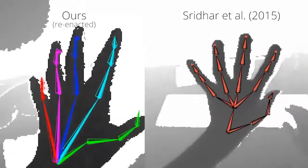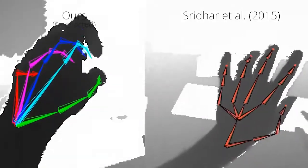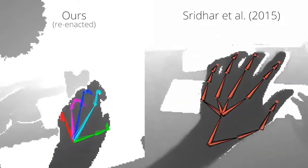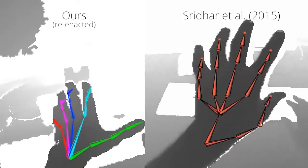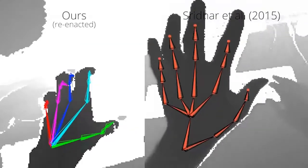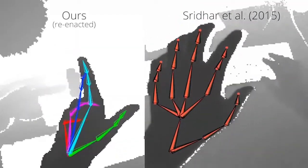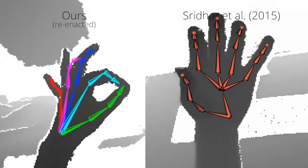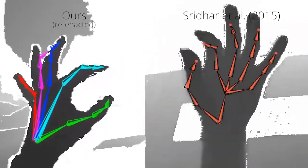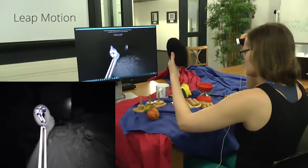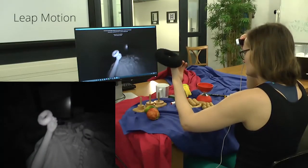Our method is also able to estimate motion in egocentric views similar to the one shown by Sridhar and colleagues. The method exhibits a sliding effect since it was not designed specifically for egocentric settings. Commercial solutions like the Leap Motion also fail in our capture space.